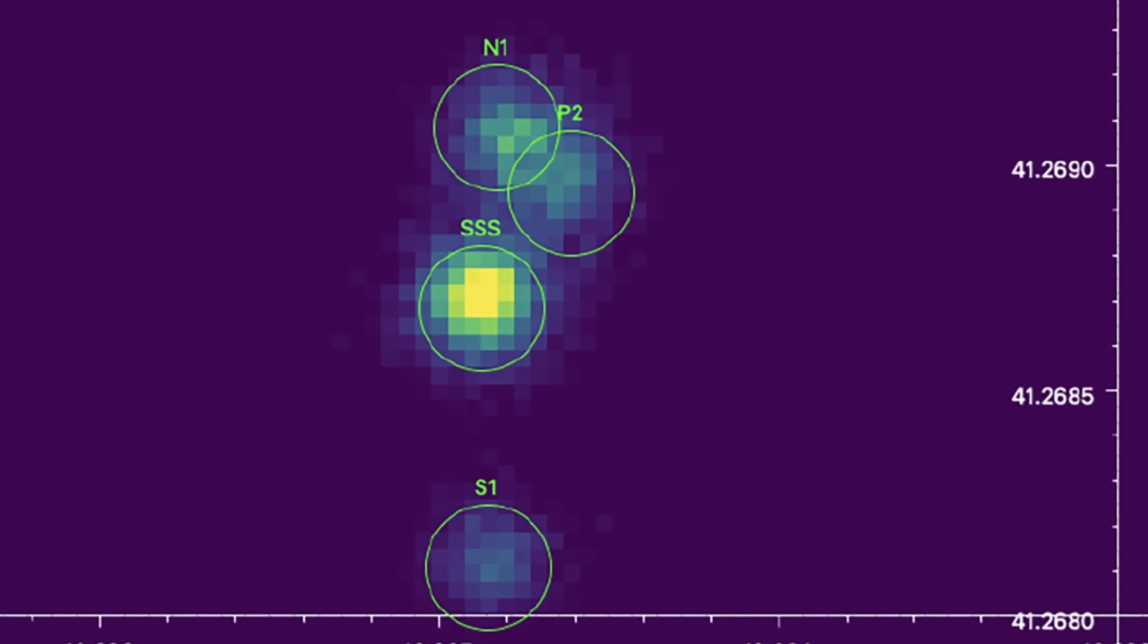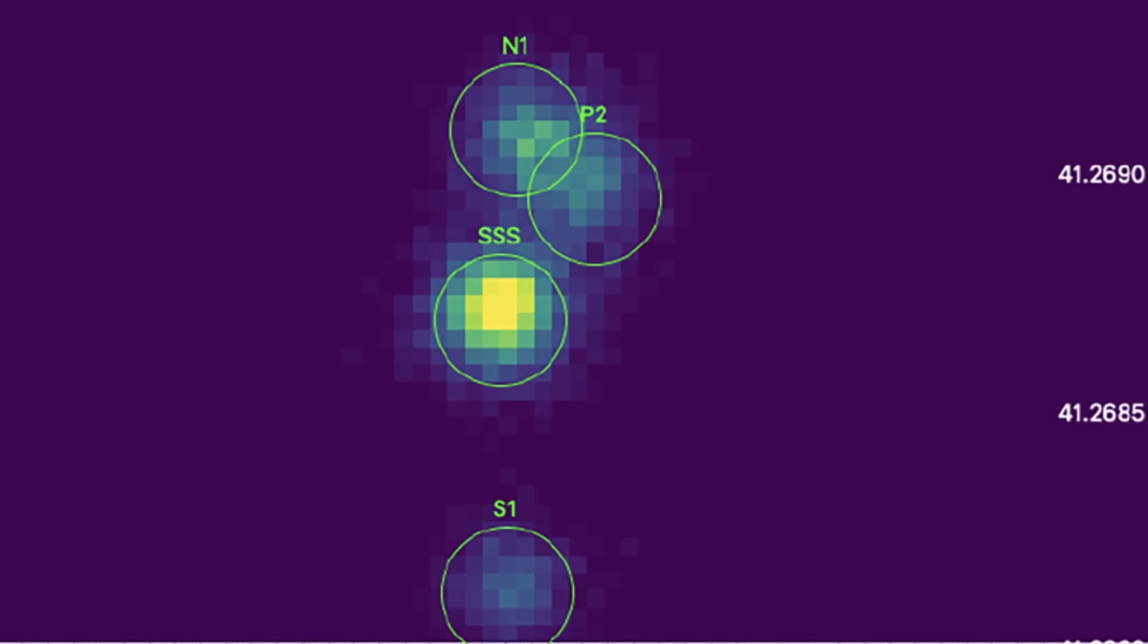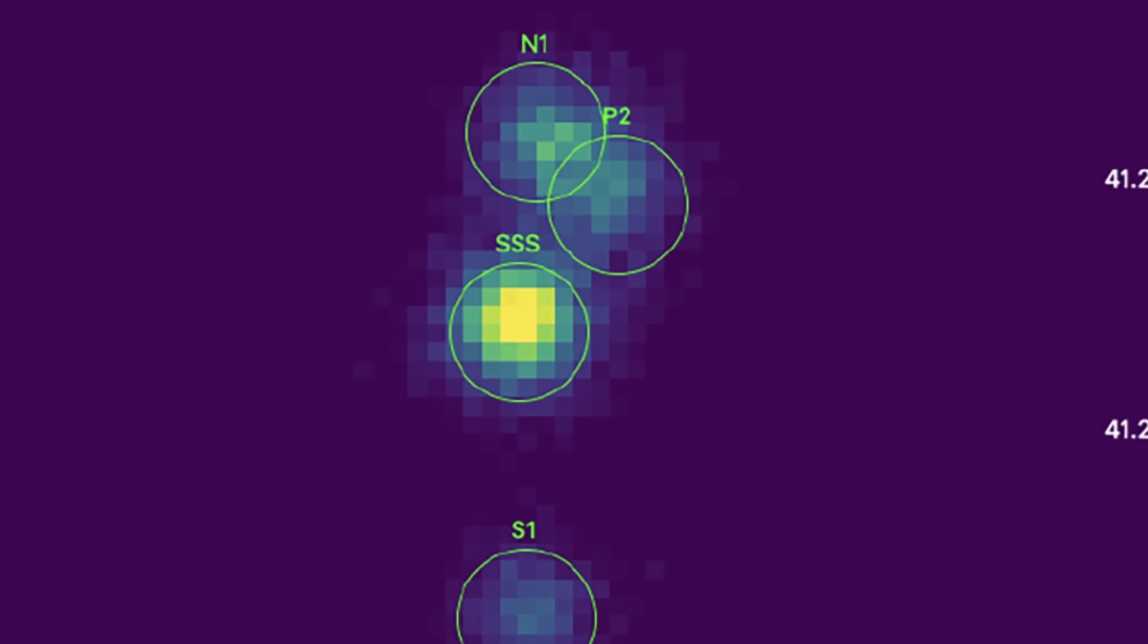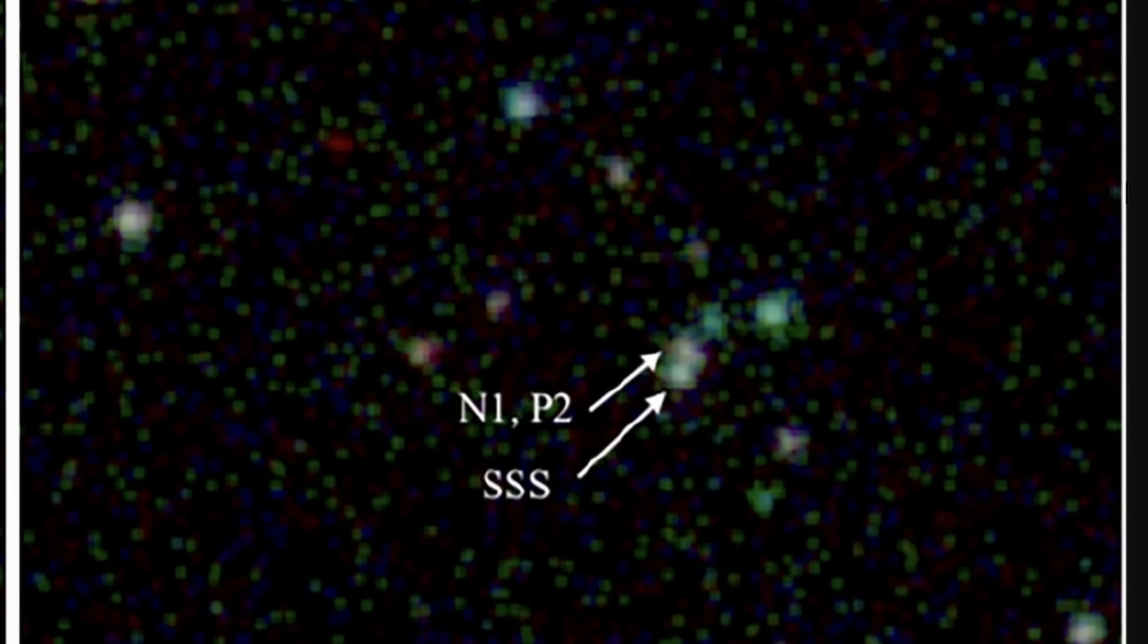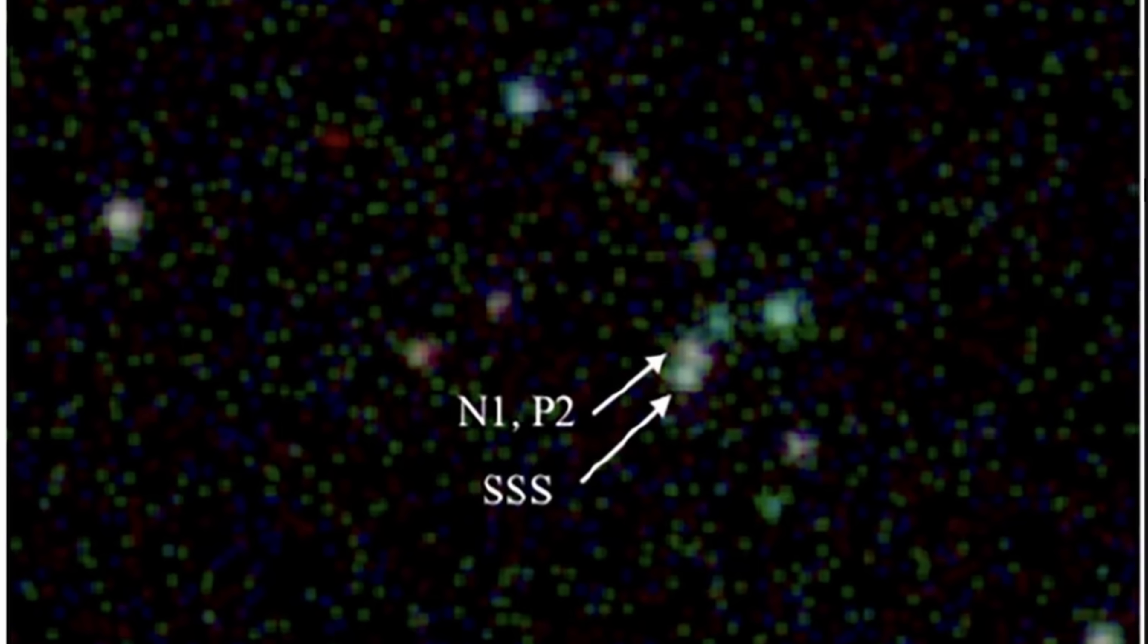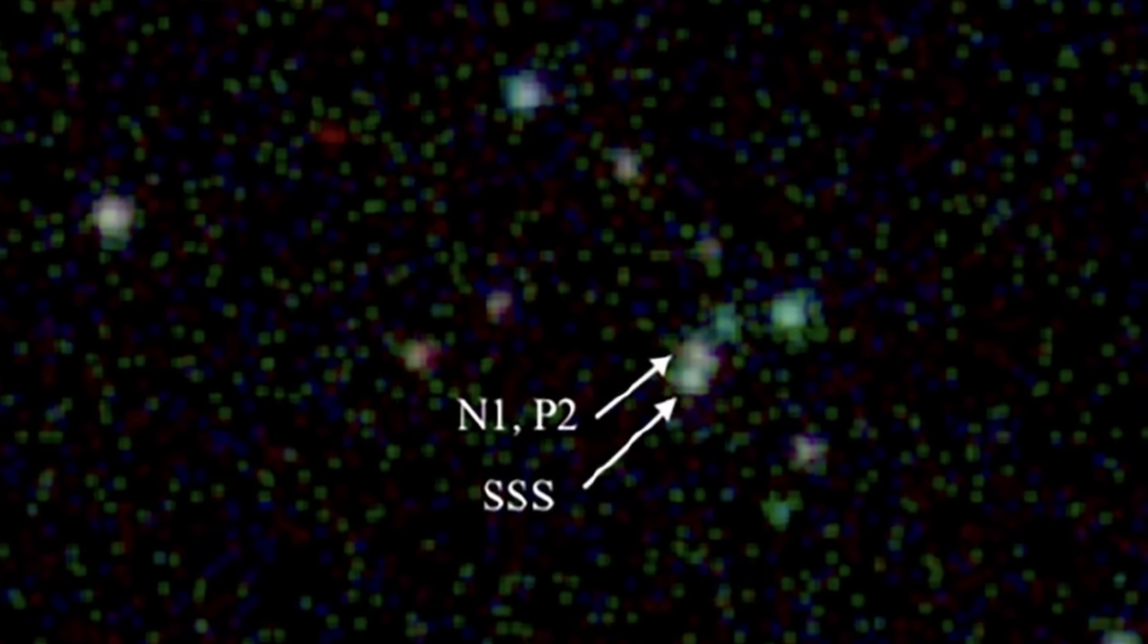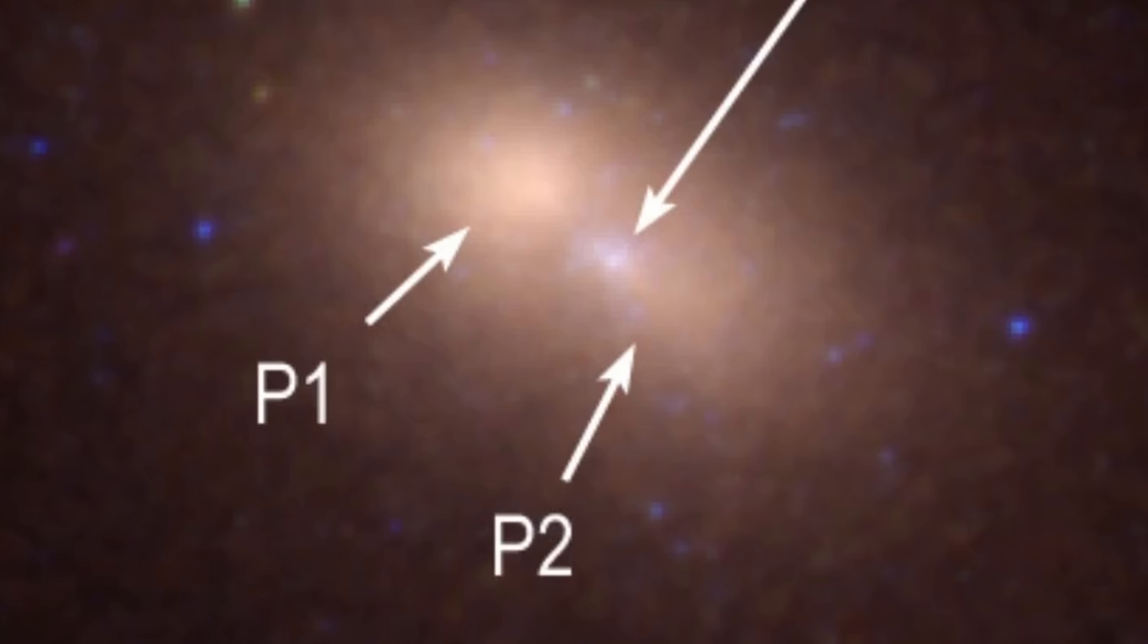And even though X-rays were coming from several regions, with the region you see right here known as SSS producing a lot of X-rays, surprisingly it's the region known as P2 that was producing most of the neutrinos. Which has already been suggested as the main region where the black hole seems to reside. And so here once again P2 was confirmed to be the home of the central black hole, as suggested by previous studies.